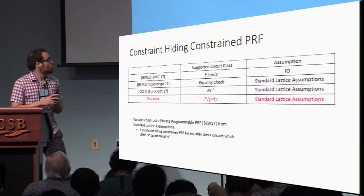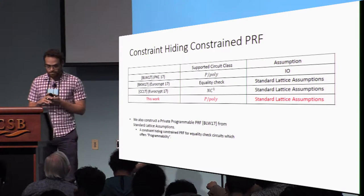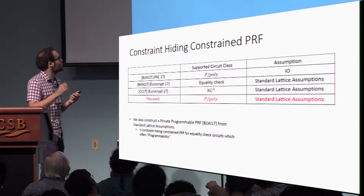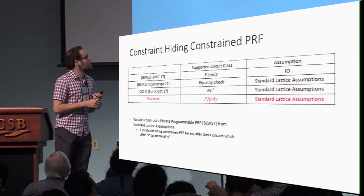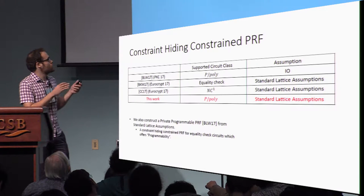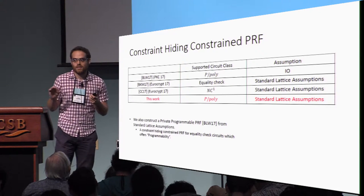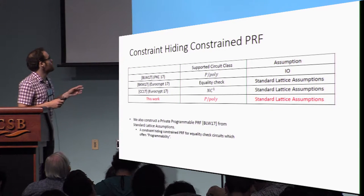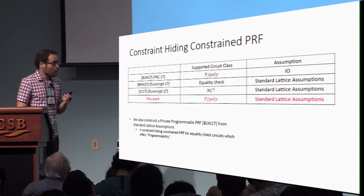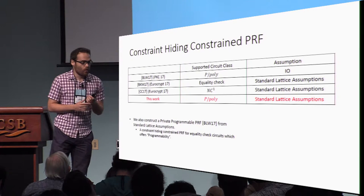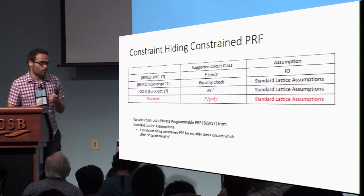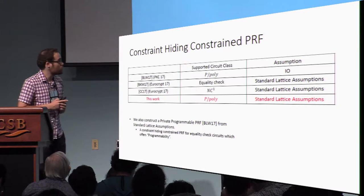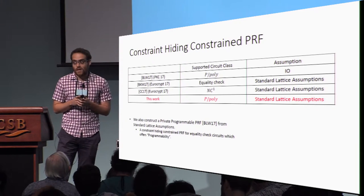Later, in Eurocrypt 2017, Boneh, Kim, and Montgomery gave a construction which supported the circuit class of equality check circuits. And in the same conference, Canetti and Chen gave a construction for NC1 circuits — circuits with logarithmic depth. Both of these two constructions were based on standard lattice assumptions.